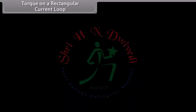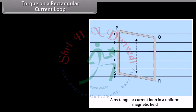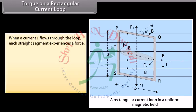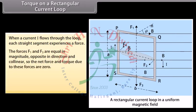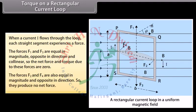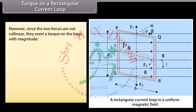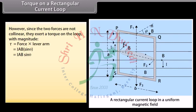Torque on a rectangular current loop: Consider a current carrying rectangular loop PQRS of sides A and B placed in an external uniform magnetic field B. The normal to the plane of the loop makes an angle theta with B. When current I flows through the loop, each straight segment experiences a force. Forces F1 and F3 are equal, opposite, and collinear, so net force and torque due to them are zero. Forces F2 and F4 are equal and opposite but not collinear, so they exert a torque of magnitude equal to IAB sin theta.